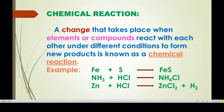You know that the changes that take place in the universe are broadly classified into two types: one is a physical change and one is a chemical change. In a chemical change, a new substance will be produced, and a chemical reaction takes place. A chemical reaction means two or more substances react with each other under a set of conditions and produce new substances. Chemical reaction is a change that takes place when elements and compounds react with each other under different conditions to form a new product.